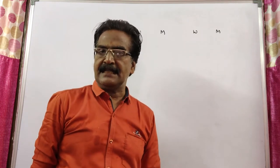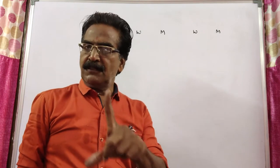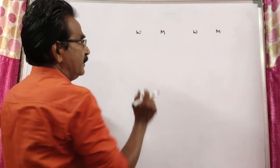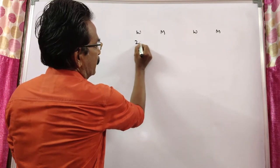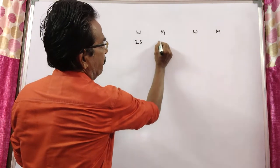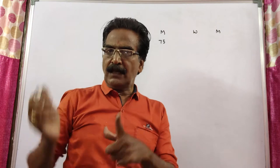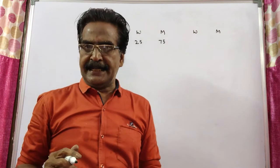A vessel contains a mixture in which 25% is water and the rest is milk. That means water 25%, milk is 75%. Now 40 liters of water is added.